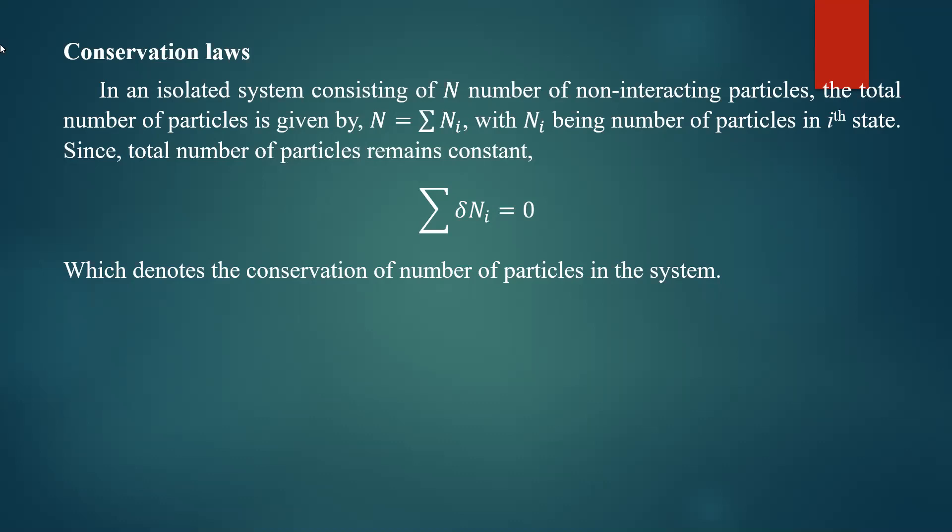In an isolated system — a system that does not exchange matter or energy with the surroundings — it is observed that the summation of delta ni should be equal to zero. Delta ni means the derivative; if you take the derivative of the ni values, that will be equal to zero, which denotes the conservation of the number of particles in the system — conservation of matter.